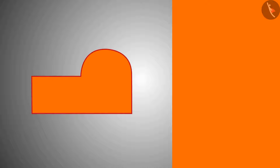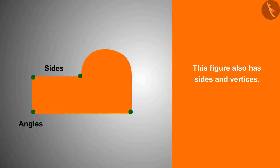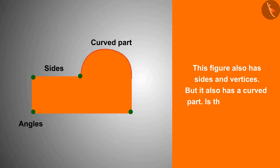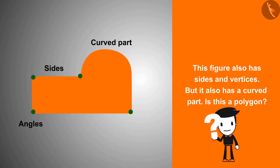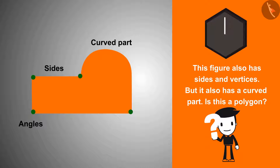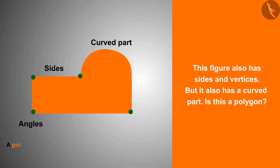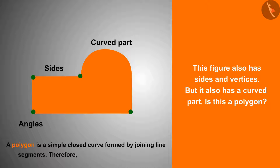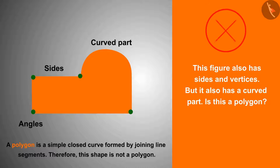This next shape looks interesting. It is a simple closed curve which also has sides and vertices, but it also has a curved part. Can it be a polygon with this curved part? We know that a polygon is a simple closed curve formed by joining line segments only, so this shape is not a polygon.